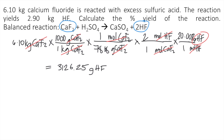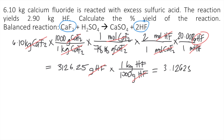Since the problem gives mass in kilograms, we do an additional step and convert to kilograms. We know 1,000 grams equals 1 kilogram, so the grams cancel out. That gives us 3,126.25 divided by 1,000, which equals 3.12625 kilograms of HF. This value we solved is called our theoretical yield.